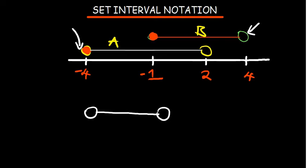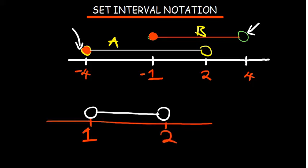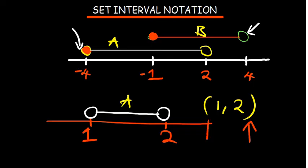Think of a set between one and two where one and two are not supposed to be part of the set. That would mean we don't shade the endpoints. So this set A is going to be written as one and two using curved brackets. Curved brackets are used to indicate when the endpoints are not shaded or when the end numbers are not part of a set. Set A involves or consists of numbers between one and two where one and two are not included.